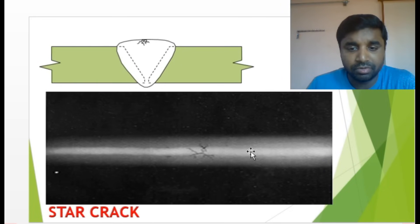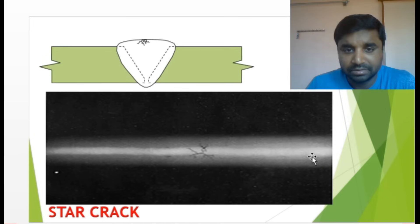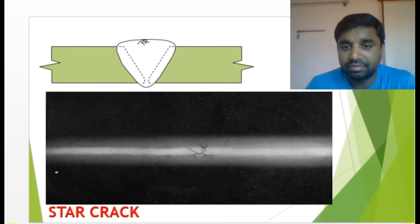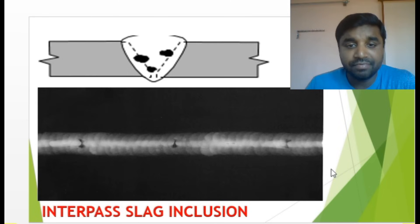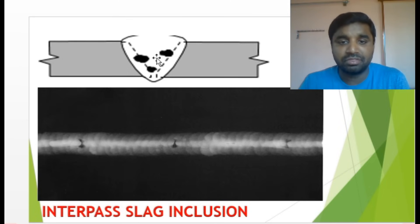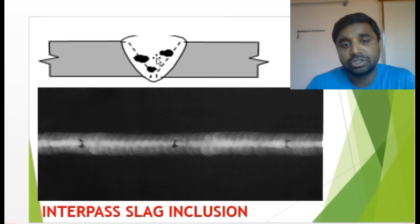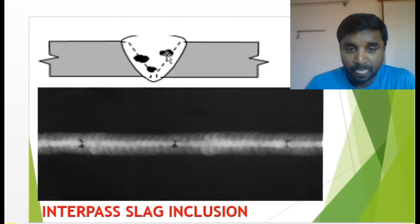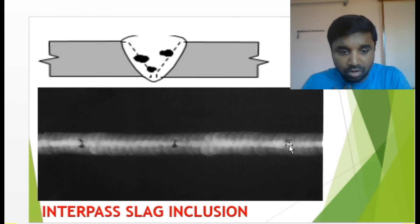Interface slag inclusion — when you are doing adjacent welding, after the first run the slag is there and you have not removed it correctly in the proper sequence before starting the second run. The slag gets trapped inside. It looks like black areas in the radiograph image. Inter-pass slag inclusion — the elongated slag lines mean there is continuous slag in the root area. After finishing the root and starting the second run without proper cleaning, it shows as elongated continuous black lines.